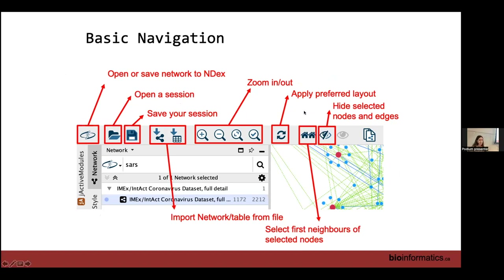On the top bar there are a bunch of different shortcuts. One opens and saves the network to NDEx. You can open and save sessions. There are shortcuts to importing a network or importing a table to annotate your network — the icon that looks like a network imports a network, and the one that looks like a table imports annotation data. You can zoom in and out, zoom to the whole network, or zoom to whatever you've selected.